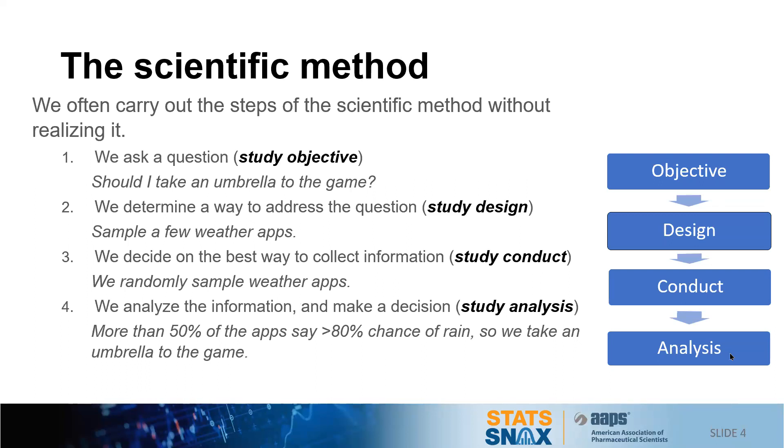And then finally, once we've acquired the data, we analyze the information and make a decision, which is the last step or the study analysis stage. So for instance, more than 50% of the apps say there's greater than an 80% chance of rain, so we decide to take an umbrella to the game.